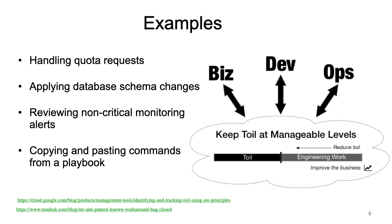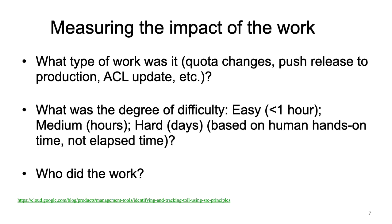Some examples include handling quota requests, applying DB schema changes, reviewing non-critical monitoring alerts, and copying and pasting commands from a playbook. Any of these can be toil which we can potentially eliminate or minimize.